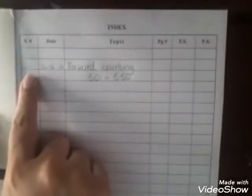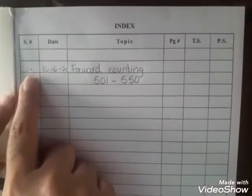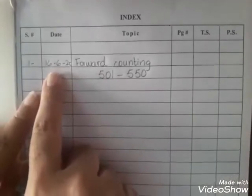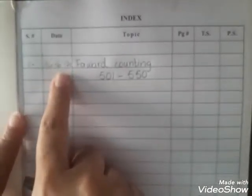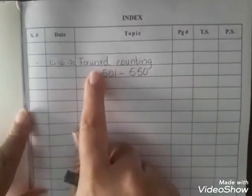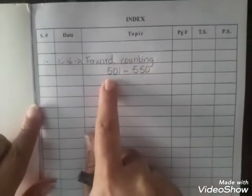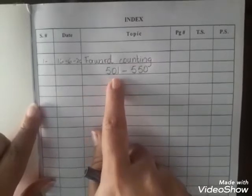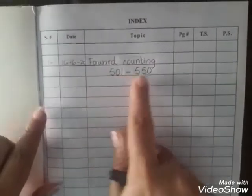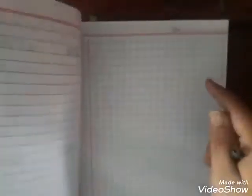First of all, open the index. You have to write the serial number, that is 1, then put today's date, that is 16 June 2020. Then forward counting — we will start forward counting from 501 till 550.